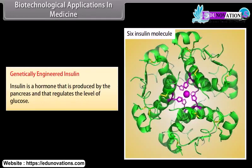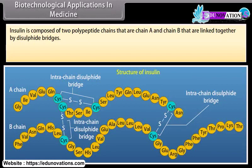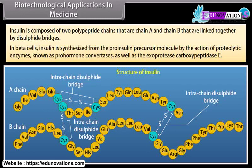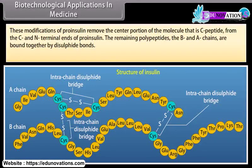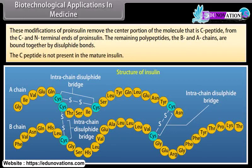Insulin is a hormone produced by the pancreas that regulates the level of glucose. It is composed of two polypeptide chains — chain A and chain B — linked together by disulfide bridges. In beta cells, insulin is synthesized from the pro-insulin precursor molecule by the action of proteolytic enzymes known as pro-hormone convertases as well as exoprotease carboxypeptidase E. These modifications remove the C-peptide from the C and N-terminal ends of pro-insulin. The remaining B and A chains are bound together by disulfide bonds, and the C-peptide is not present in mature insulin.